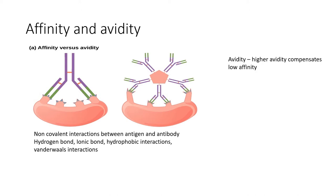There is a non-covalent interaction between the epitope of an antigen — the antigenic determinants — and the variable region, particularly the hypervariable region of the antibody, which is also called the paratope. There are various non-covalent interactions between the epitope and the paratope: hydrogen bonds, ionic bonds, hydrophobic interactions, and van der Waals interactions. These interactions are individually weak, so a large number of interactions are required to form a strong bond between antigen and antibody. These non-covalent bonds all together make a strong bond and contribute towards the affinity of an antibody.